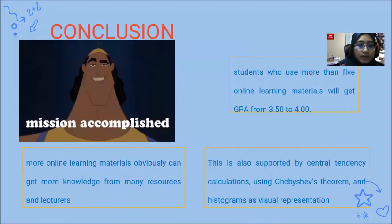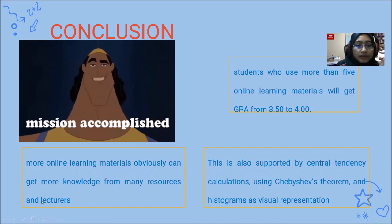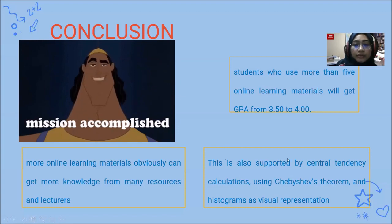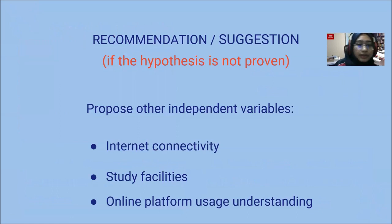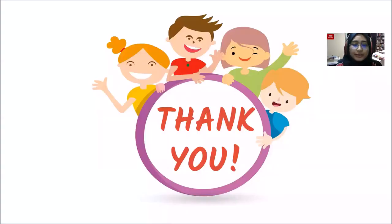Now we have come to our conclusions. To conclude this research, we can say that using more online learning materials allows students to gain more knowledge from many resources and lectures. It has been proven that students who use more than five online learning materials will get a GPA from 3.5 to 4.0, supported by central tendency calculations, Chebyshev's theorem, and histograms. As recommendations if the hypothesis were not proven, we would propose additional independent variables: internet connectivity, study facilities, and online platform. Thank you.